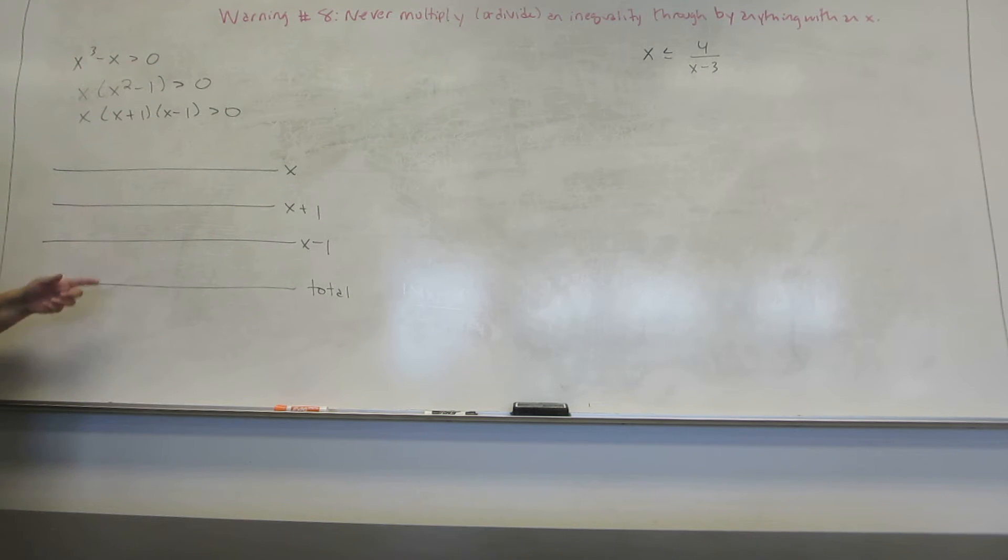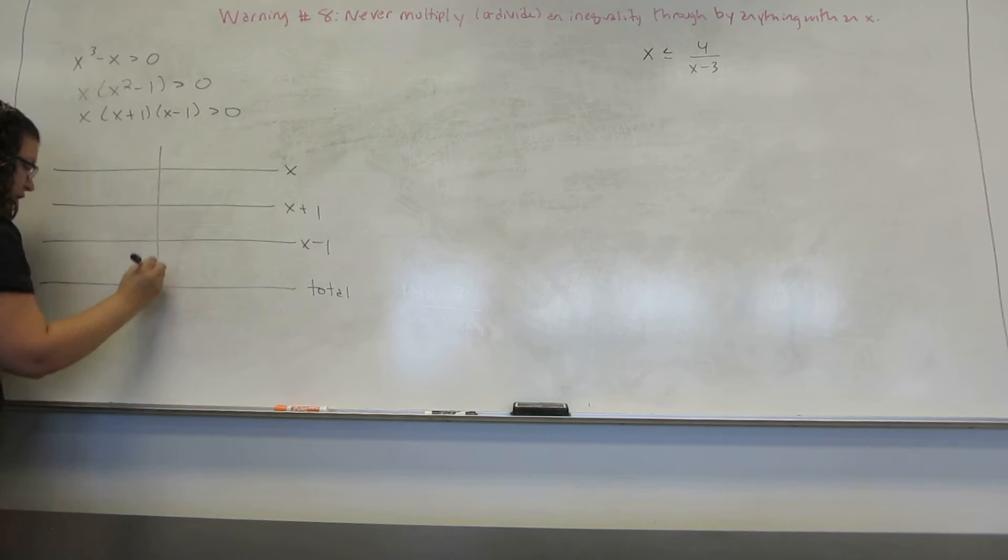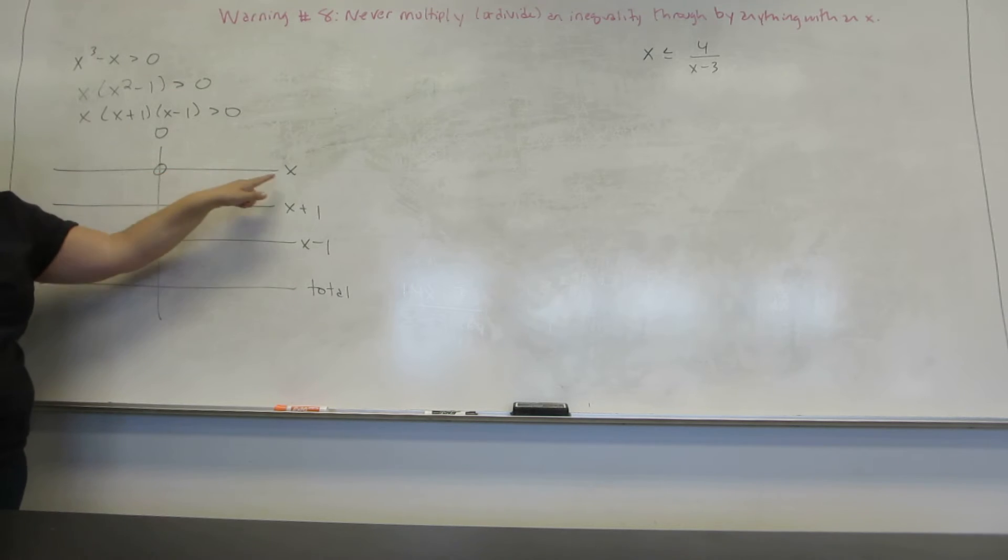This next step is to put a vertical line for everywhere that one of the factors equals zero. So when does X equal zero? Well at X equals zero. It feels a little bit like a trick question. So I'm going to put a vertical line that goes through all the horizontal lines and label it X equals zero. And then to indicate that this is where this factor equals zero.